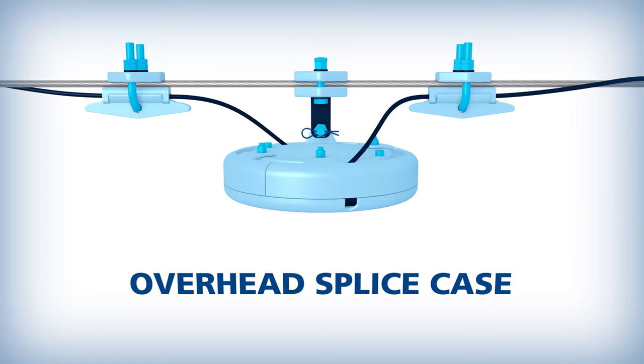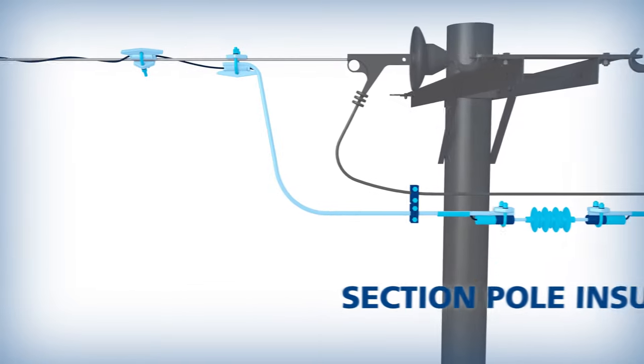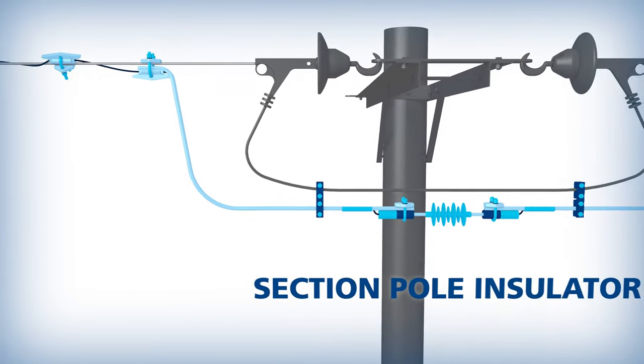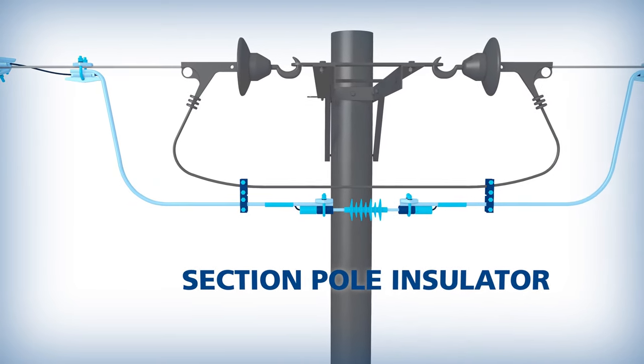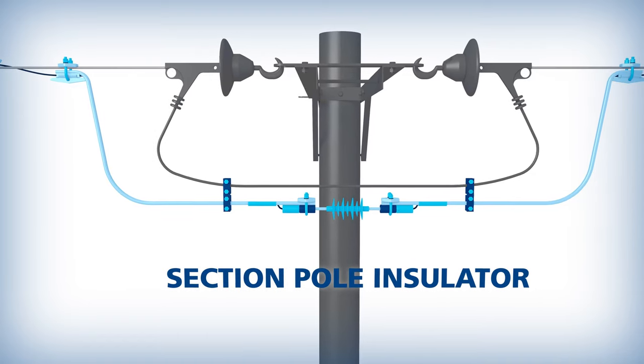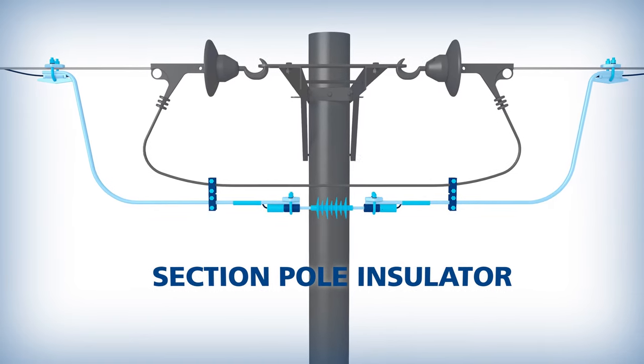The AccessWrap solution comes with specifically designed hardware, including overhead splice cases and section pole insulators. These facilitate circuit isolation and splicing of the cable directly on the conductor at specific locations, reducing the need for unnecessary splices at ground level.